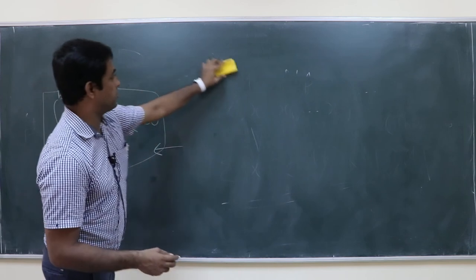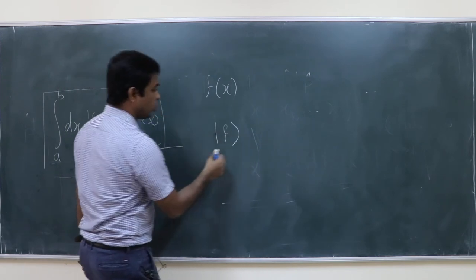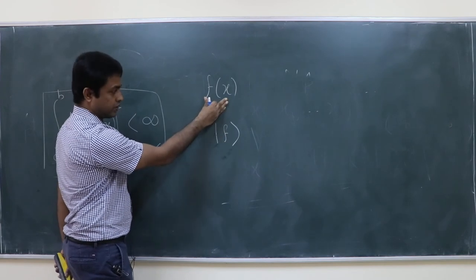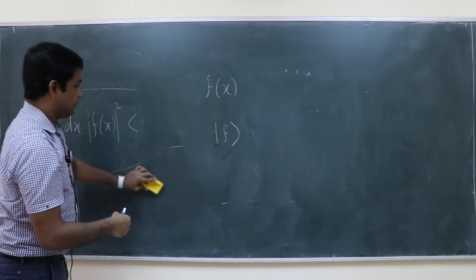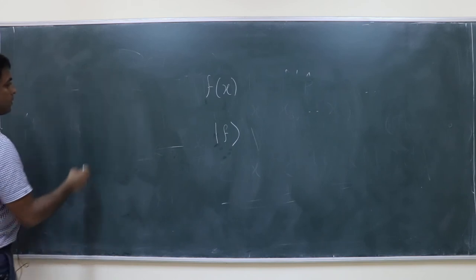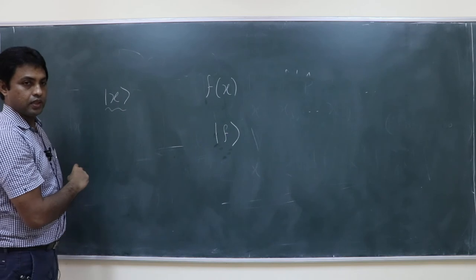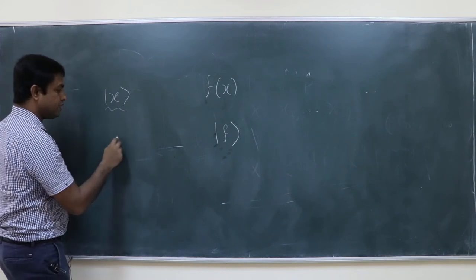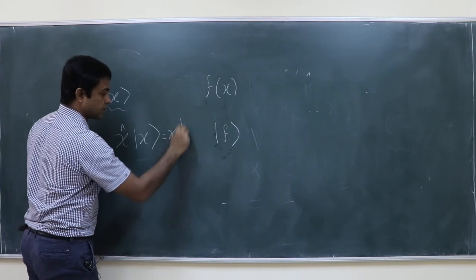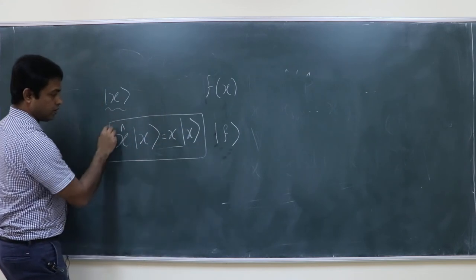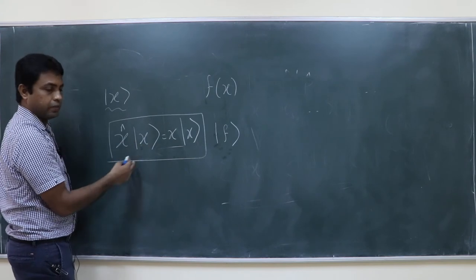What is the relation between f(x) and some abstract vector |f⟩? To connect them, you introduce a basis |x⟩. In quantum mechanics this is a continuous position basis — the eigenstate of the position operator x̂ with eigenvalue x, so x̂|x⟩ = x|x⟩. The position basis is infinite-dimensional and continuous, since a particle in 1D can be anywhere from −∞ to +∞.